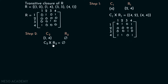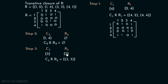In Step 3, we consider column 3 and row 3. In column 3, the value 1 appears at position 3, and in row 3 also at position 3. So C3 = {3} and R3 = {3}. Therefore C3 × R3 = {(3,3)}, and since position (3,3) already has a 1, there is no need to create a new matrix.